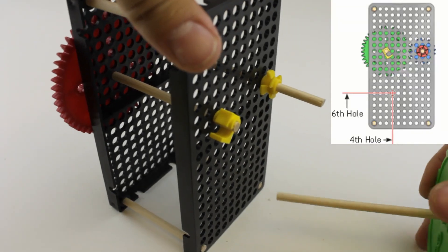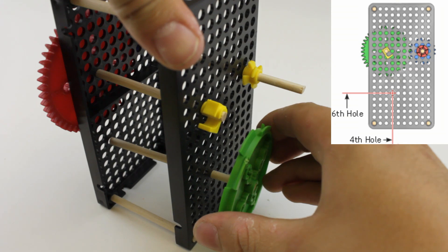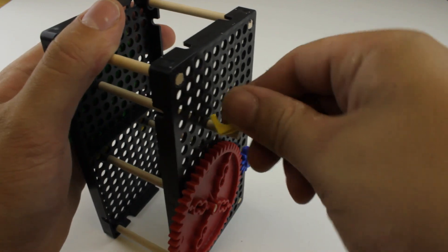Now place the dowel with the pulley on it into the hole marked in the picture above. Then place the stop clip onto the end of the dowel that you just pushed through your hole plates.